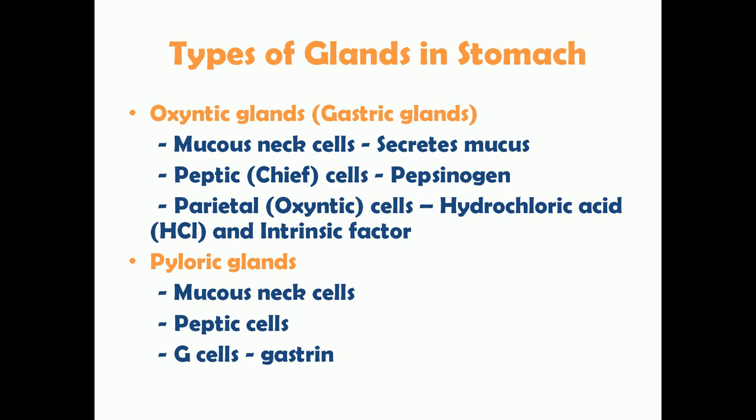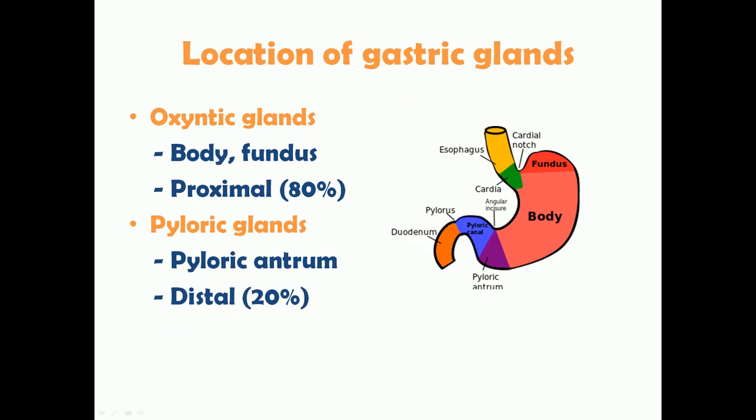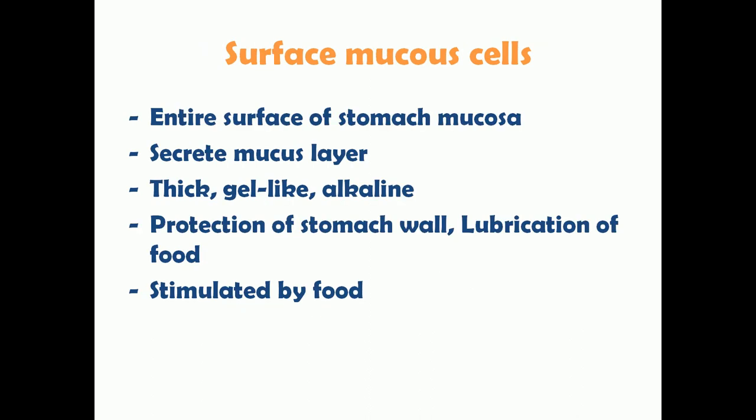In addition, pyloric glands also contain G cells, which secrete gastrin. Regarding the location of these glands: the stomach has parts such as fundus, body, and pylorus. The oxyntic glands are distributed in the body and fundus, contributing to the proximal 80% of the stomach, while the pyloric glands are located in the pyloric antrum, the distal 20% of the stomach.